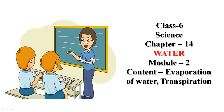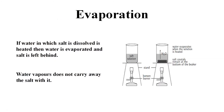Let us understand evaporation and transpiration. We know that if salt is dissolved in water and if we heat that water, then water is evaporated and the salt is left behind. This tells us that on heating, water changes into its vapor and water vapor does not carry away the salt. Water vapor becomes a part of the air. Heating is essential to convert water into its vapor.